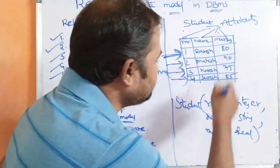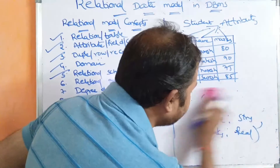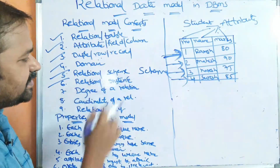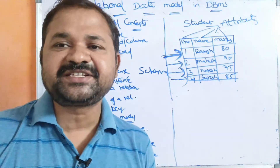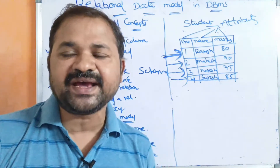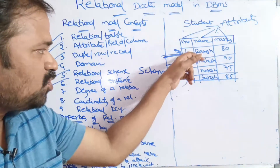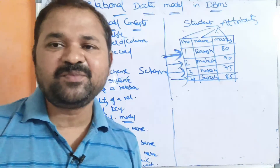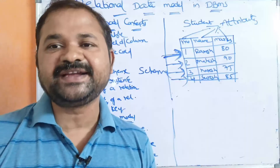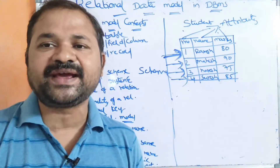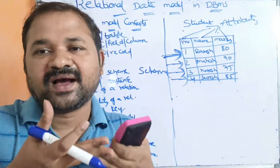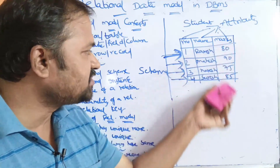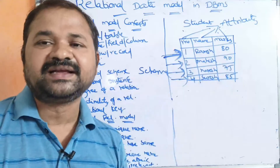Now let us see relational instance. Relational instance means a set of tuples — a finite set of tuples at a given time. Here the table contains four tuples, so this is called the relational instance. If the table contained six tuples, then those six rows would be the relational instance.